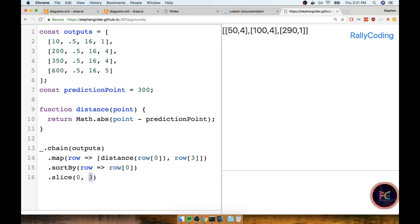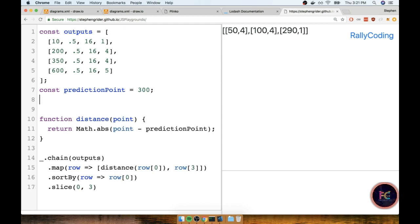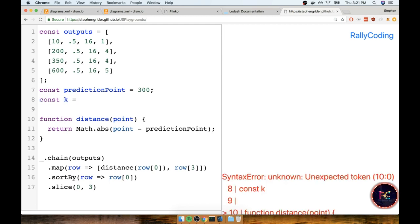Now you'll notice I hard-coded 3 right here, but k is supposed to be a variable. To make sure this is easy to change in the future, I'm going to create a new variable up here and call it k, and then reference that down there. So now if I ever want to change the number of records I'm considering for my prediction, I could very easily just change k right here.